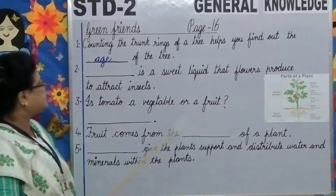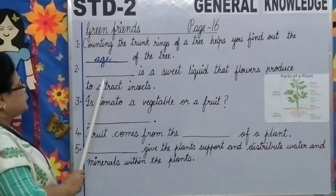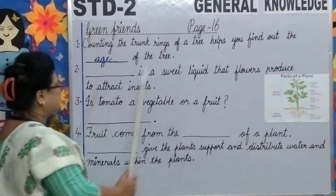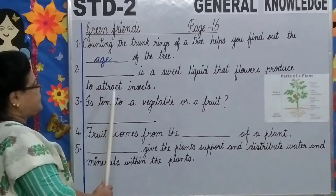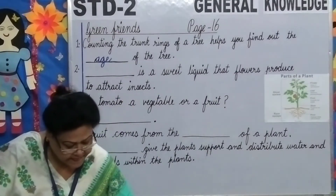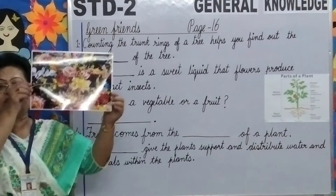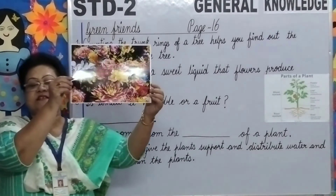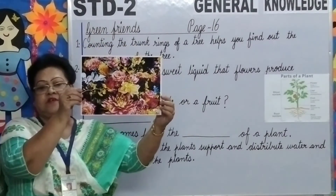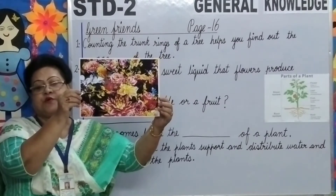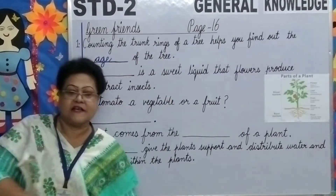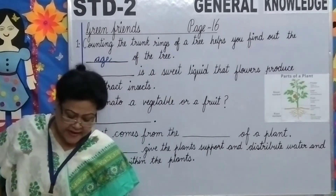Number 2: Blank is a sweet liquid that flowers produce to attract insects. Look at this picture, children. This is a picture of some beautiful flowers. What do flowers produce to attract insects? Flowers produce nectar.